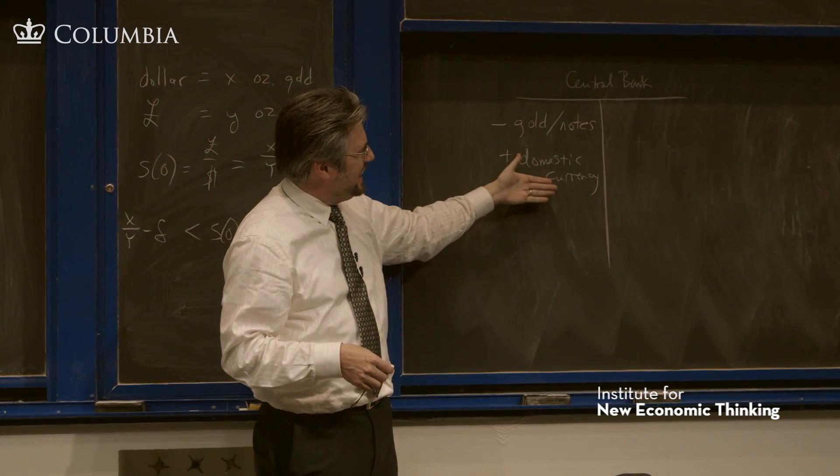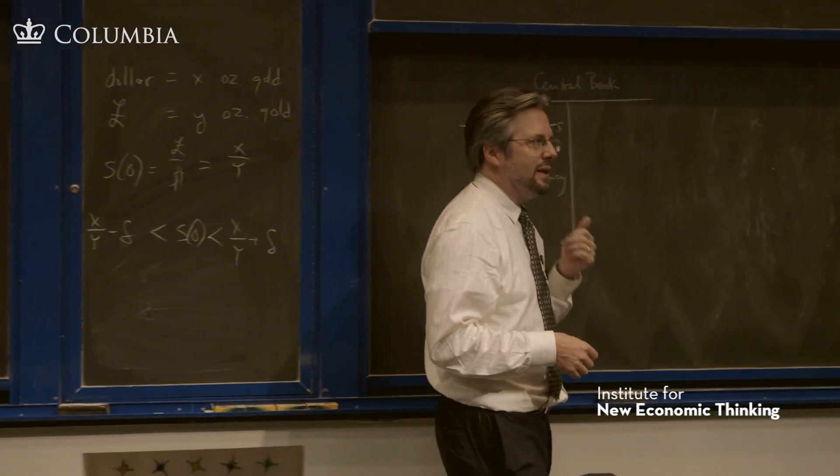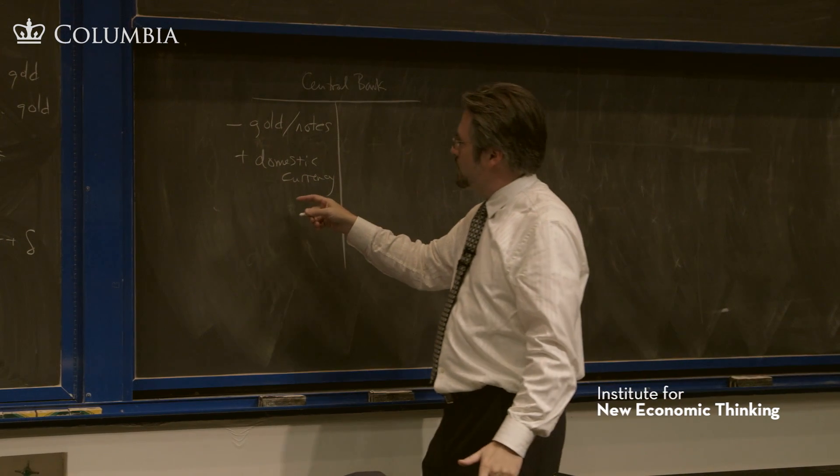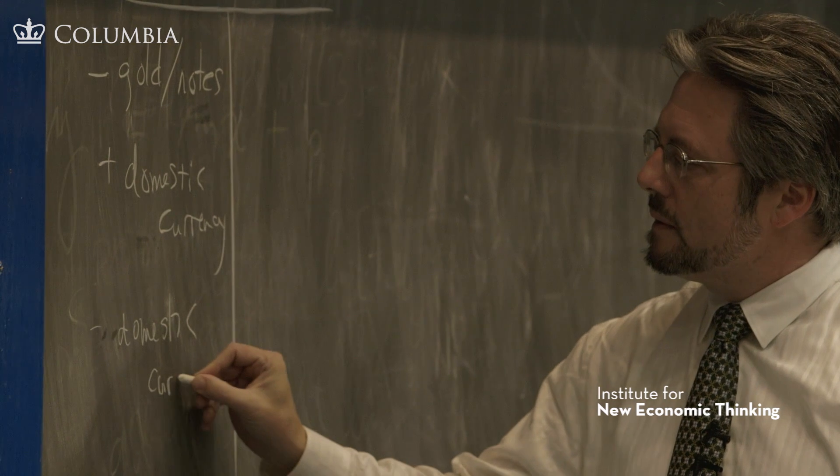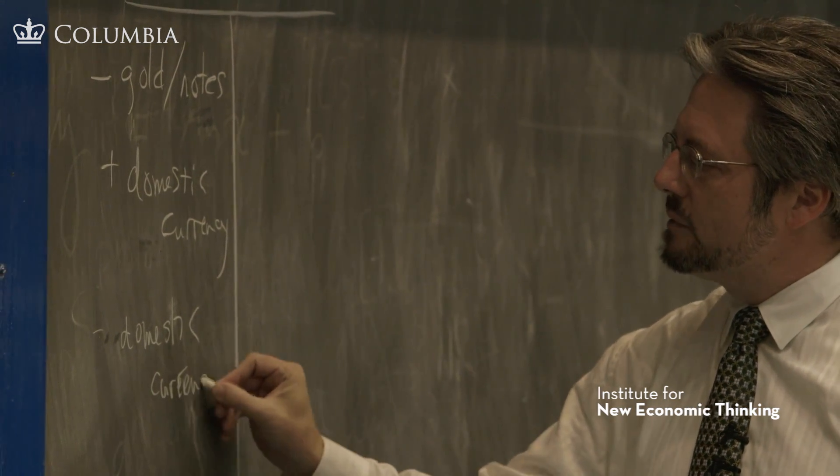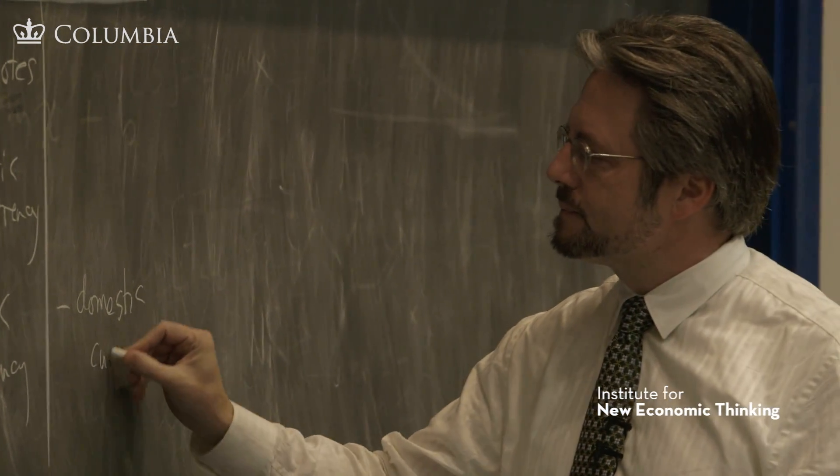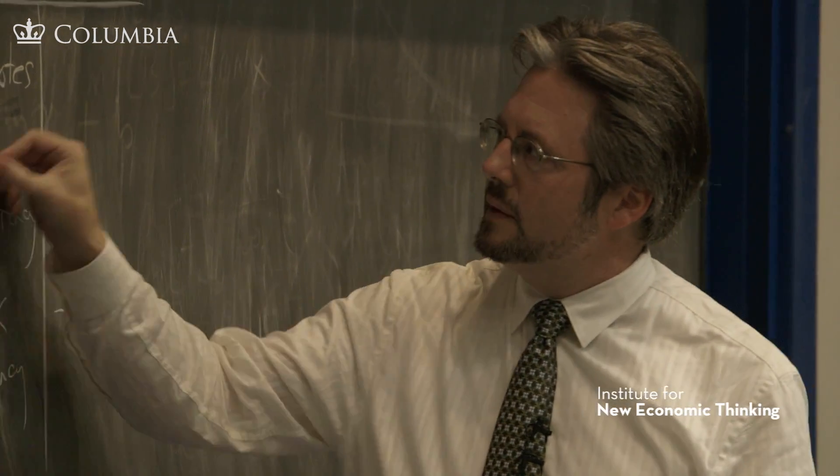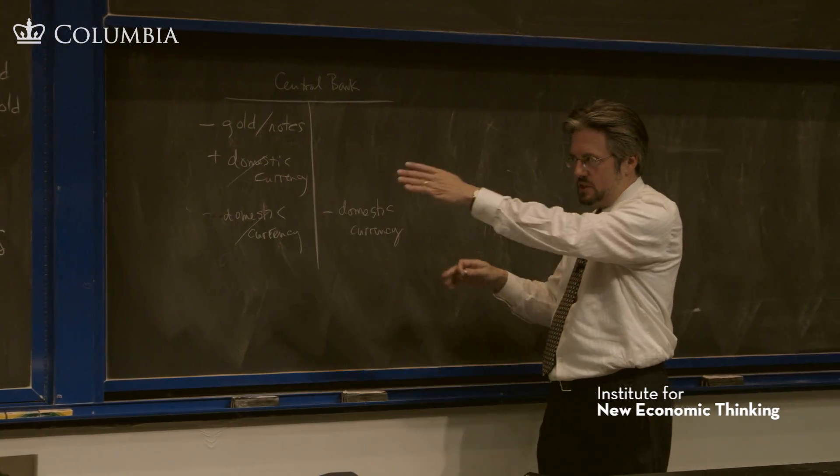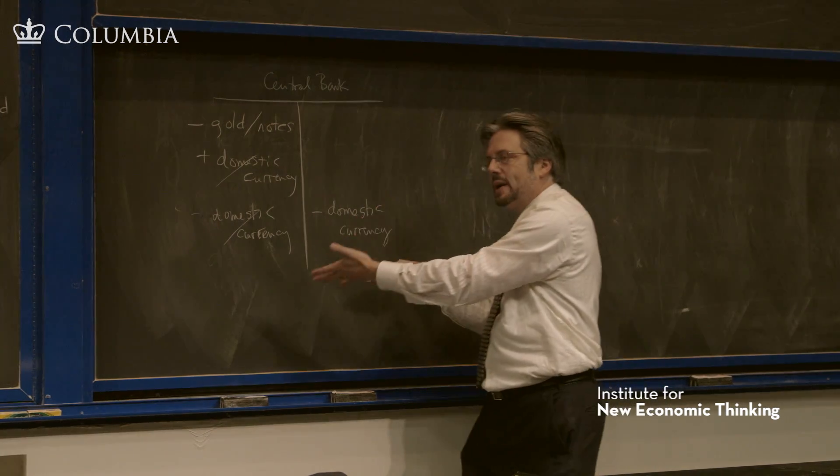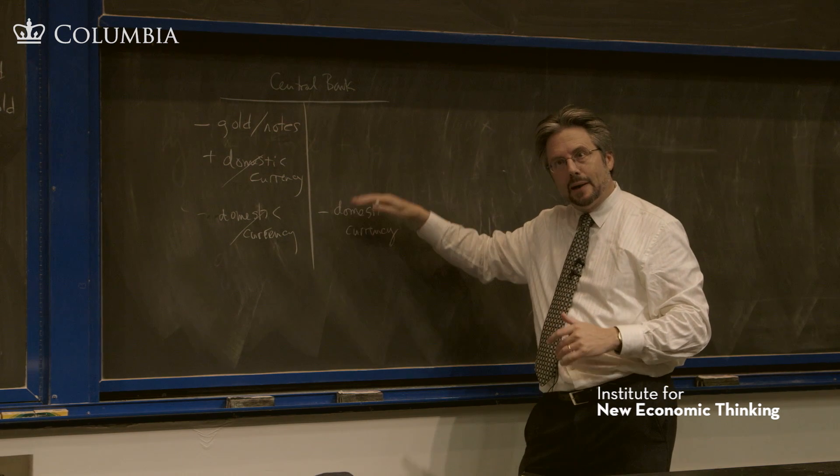Before I get to that, note here, plus domestic currency. Domestic currency is a liability of the central bank. So this really just wipes out some amount of currency that is on the liability side here. These cancel. So really what is going on here for the central bank, which is different from the dealer, is a shrinking of their balance sheet. You're losing reserves and you're shrinking the money supply, the high-powered money supply.